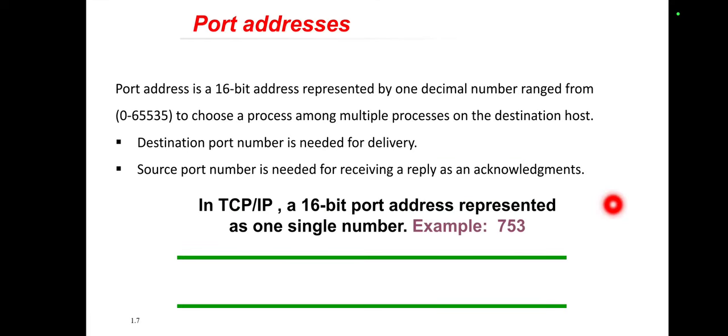The next address is the port address. The port address is a 16-bit address represented by a single decimal number, and that decimal number ranges from 0 to 65535. The destination port number is needed for delivery, and the source port number is needed for receiving a reply as an acknowledgement. While the physical address changes from hop to hop, the logical and port address usually remain the same. For example, in the TCP/IP model a 16-bit port address is represented by the single number 753.